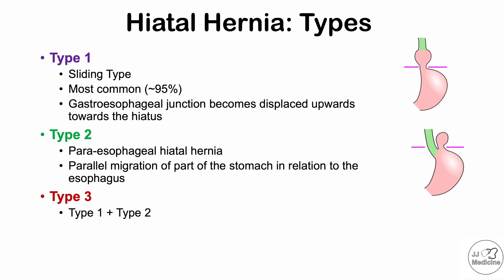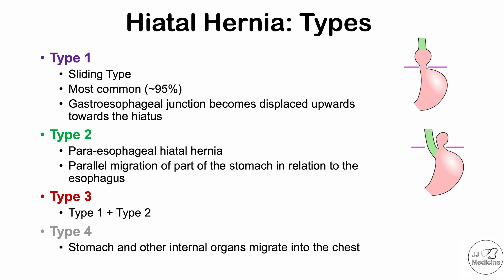Type 3 is a mixture of type 1 and type 2 — so type 1 plus type 2 equals type 3. Type 4 is where the stomach and other internal organs migrate into the chest, making it the most severe type. Type 1 is the most common, representing 95% of hiatal hernia cases, type 2 is the second most common, and the other types make up the remaining percentages.